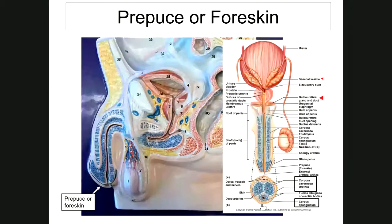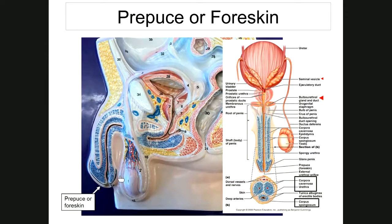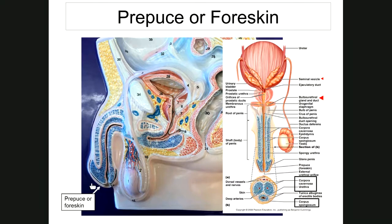The glans penis is the head of the penis — the word means acorn. It is covered by a loose flap of skin called the prepuce or foreskin. A clitoral hood similarly covers the clitoris in females. The foreskin is removed during a procedure called circumcision, performed for hygiene or religious purposes. That concludes the male reproductive system.